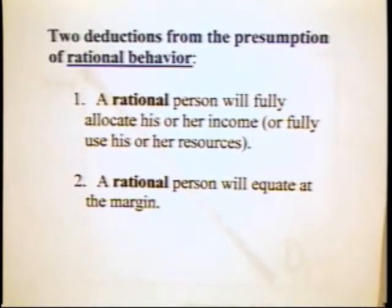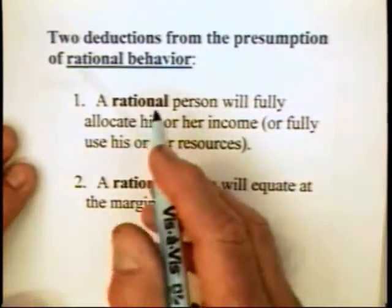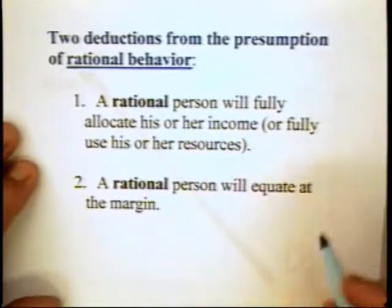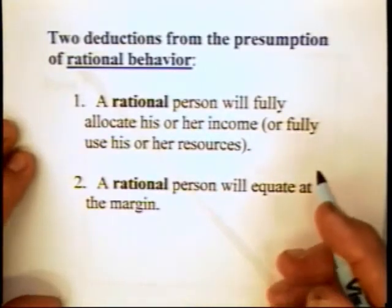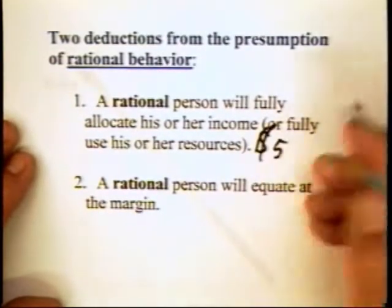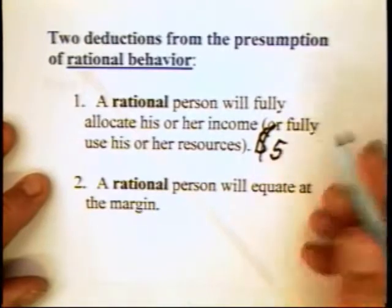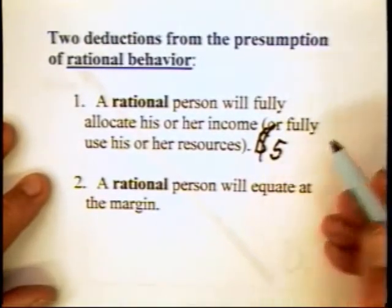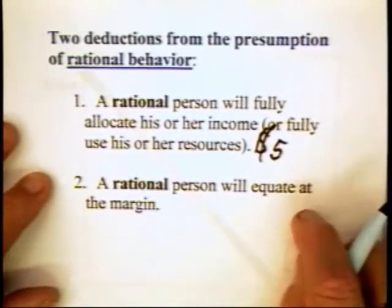There are two deductions we can draw from rational behavior that are relevant to the construction of the Law of Demand. First, we can assume that a rational person will fully allocate his or her income or fully use his or her resources. If the person hasn't fully allocated, then that person hasn't maximized well-being. If a person starts off with $100 and leaves $5 unallocated — with no intended purpose — that individual is foregoing some utility from using the $5 to buy some good, for example, a glass of wine.